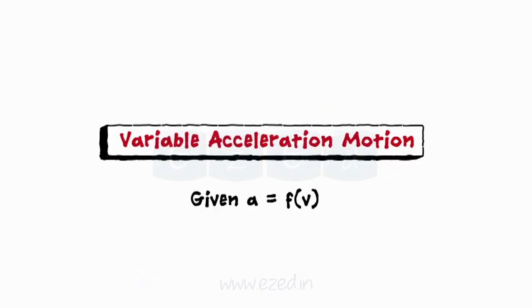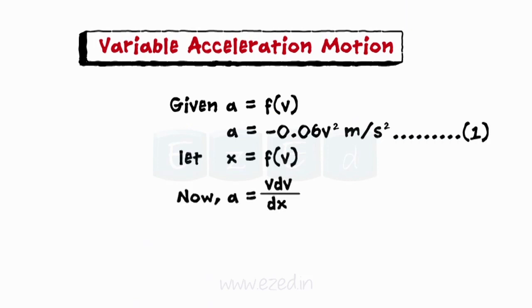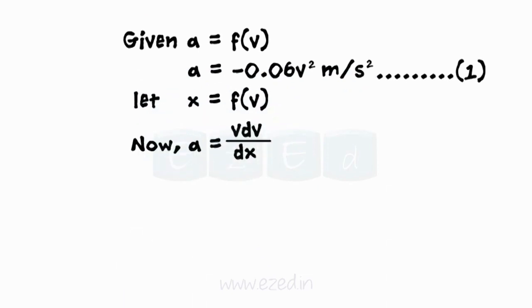As per the given data, acceleration is a function of velocity. Writing the given equation for acceleration. To find the position of a particle, we will use the equation for variable acceleration.